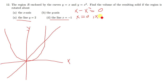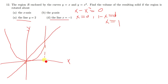We have already learned how to find the volumes for rotation about the x-axis and y-axis. Now let's look at the remaining parts. We know the formula: upper limit 1, lower limit 0. Let's start with rotation about the line y equals 2.